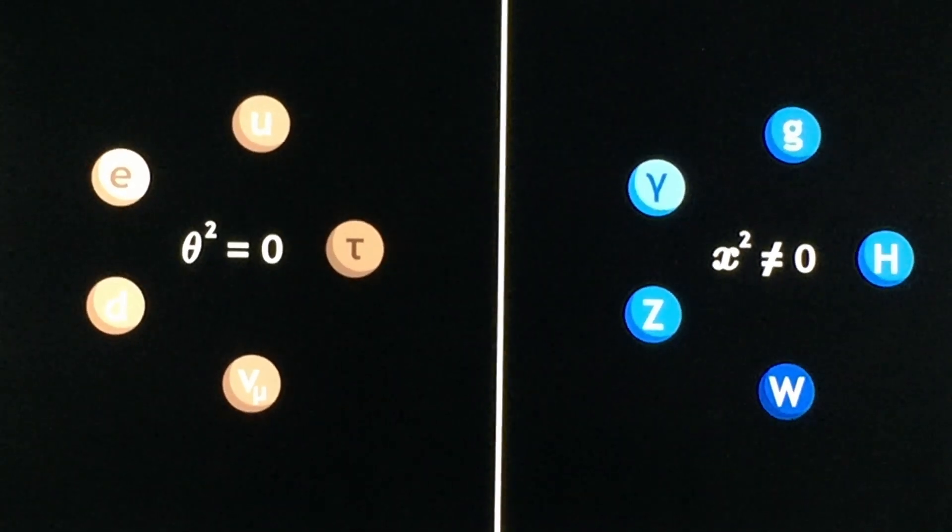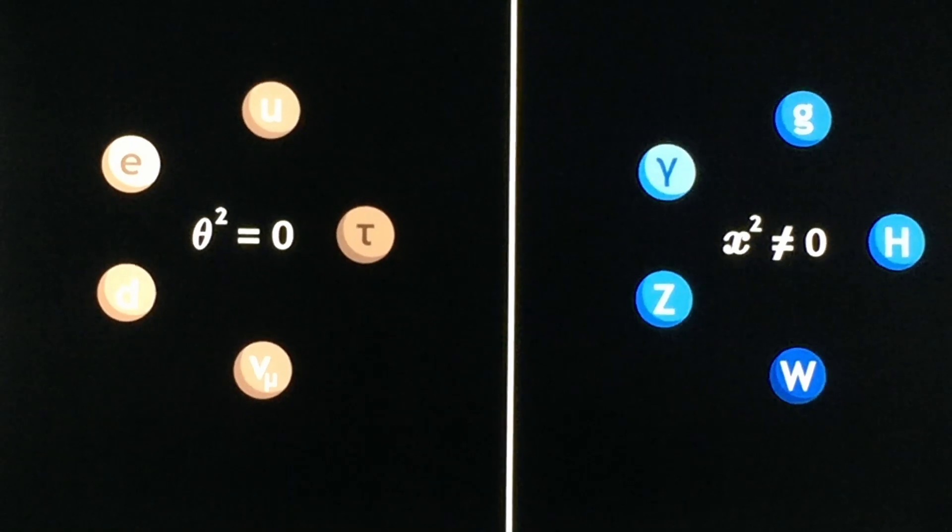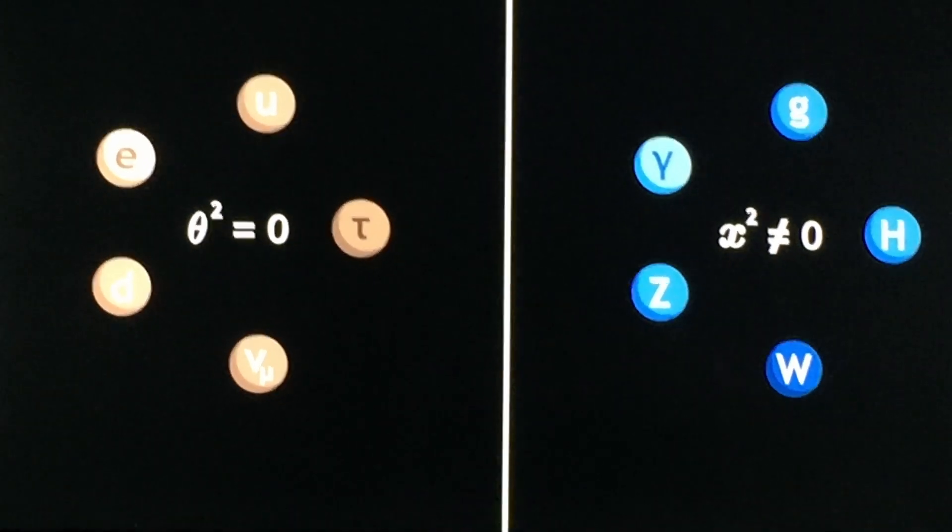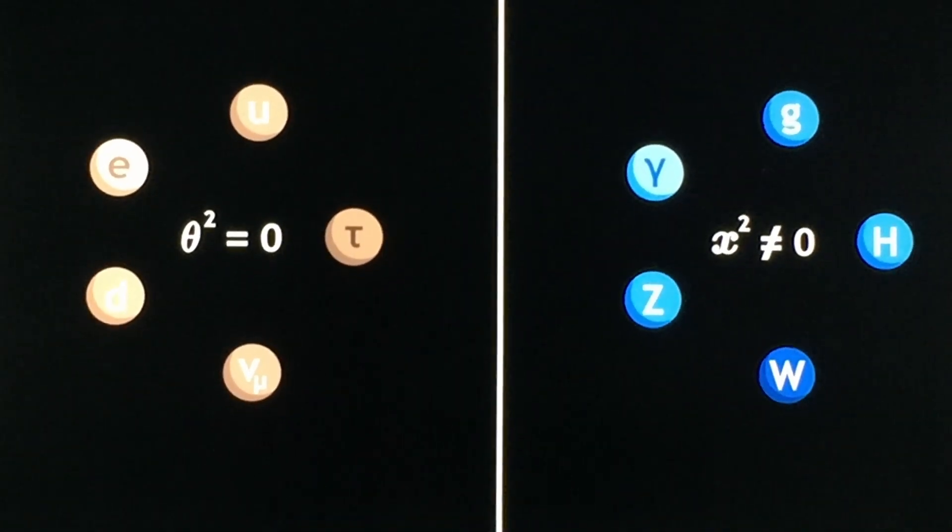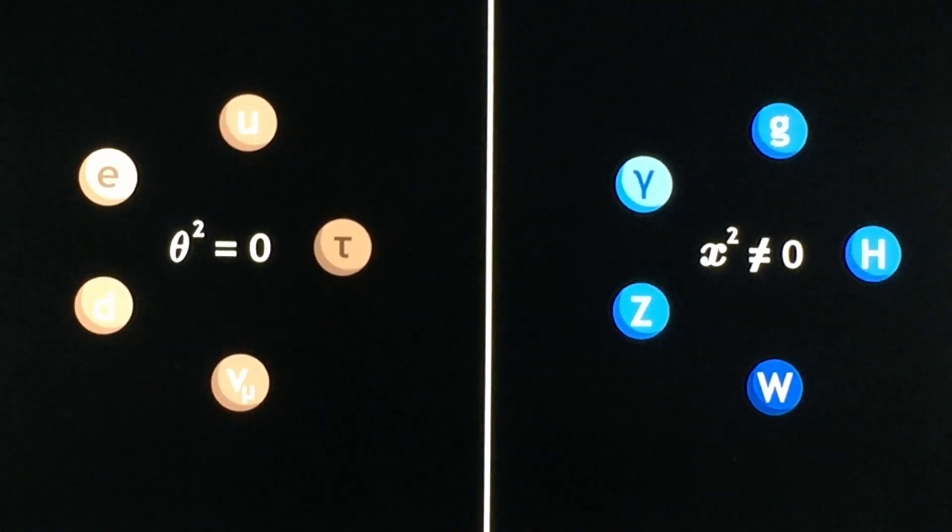But look at the left, theta squared equals zero. That's a Grassmann number. It's not even a real number. It's like a mathematical object or concept.